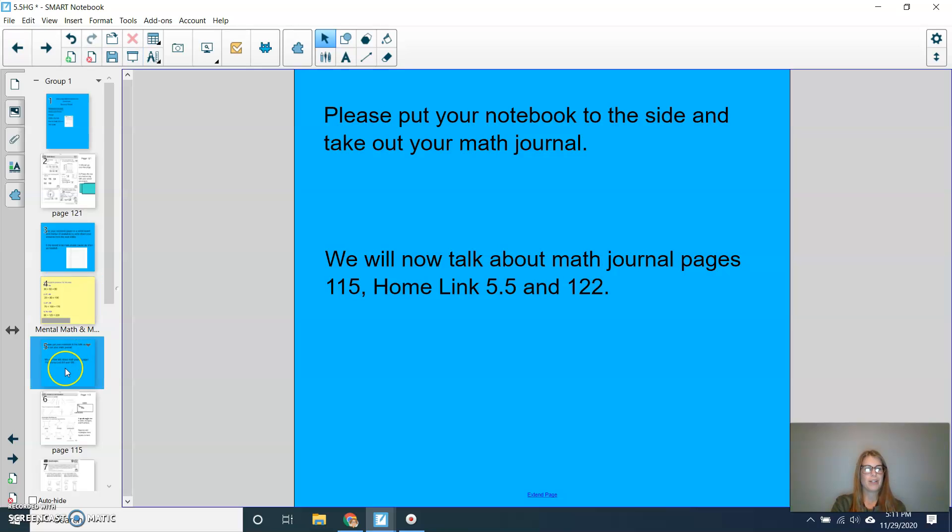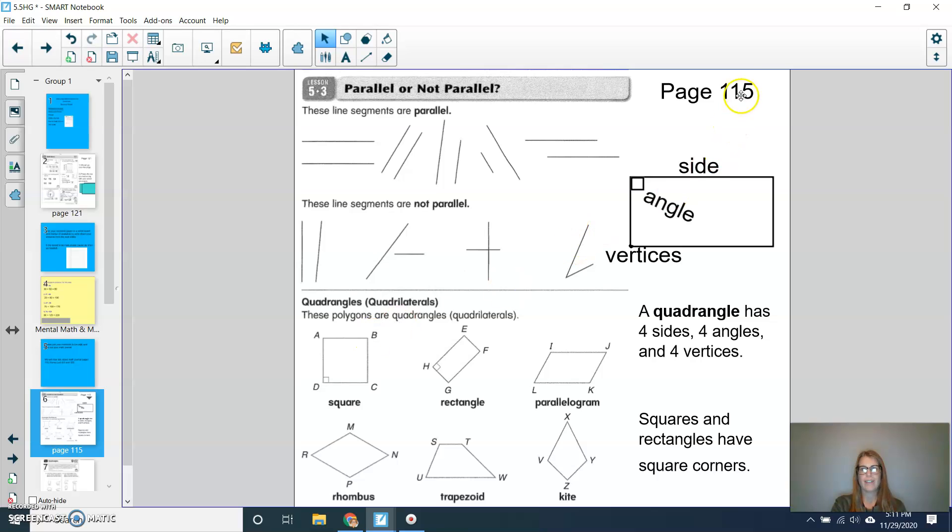So now you can put your whiteboard or your notebook to the side. And we're going to first talk about math journal page 115 before going into homelink 5.5. So if you can open up your math journal, going back to page 115. So we talked about this page in lesson 5.3. We've already talked about parallel lines and not parallel. But today let's look at our quadrangles or quadrilaterals. So again, these polygons are quadrangles or quadrilaterals. They all have four sides. Here's our sides. They all have four angles. So in the corner, what we're seeing are angles. And then they also have four vertices. So vertices are the points that those line segments are coming to.